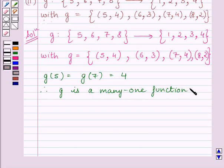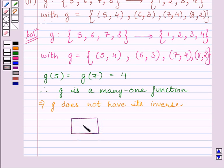Since it is not a one-one function, so it is not invertible. This implies g does not have its inverse. So our required answer is no. g does not have its inverse since g is a many-one function. This completes the session. Hope you understood the session. Goodbye.